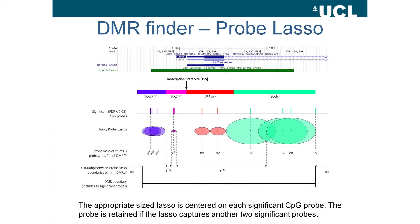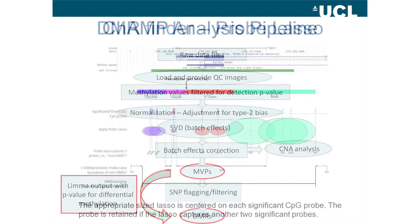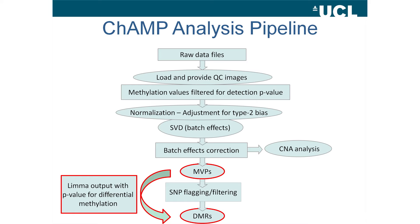Focusing in on one region of the genome on chromosome 3, these are the significant probes in that region and the features they fall within. You have a separate size lasso for each feature region. You center the lasso on a significant probe, and if the lasso covers three probes, it's considered a DMR. Here, if it only covers one probe, it's not considered a DMR. In the body, the lasso is larger but still needs to catch three probes to be a DMR. Additionally, if there is less than 1,000 base pairs between what you might call mini-DMRs, they are called one big DMR. This 1,000 base pairs parameter can also be adjusted.